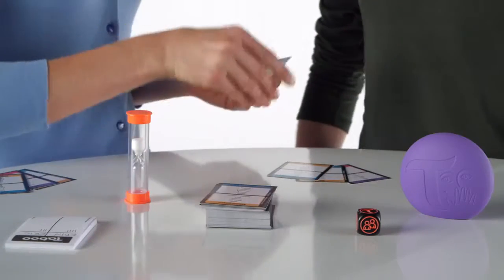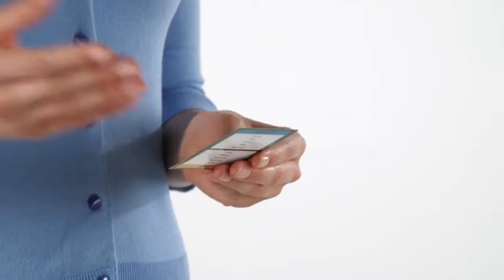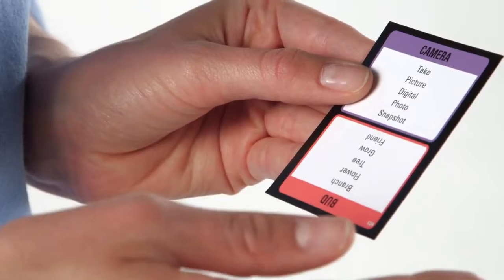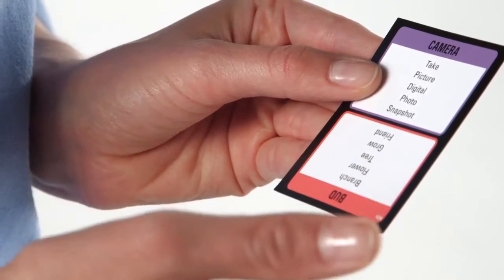One player then begins describing the clue found on the card, trying to get their teammates to guess. That player can say anything except the taboo words listed on the card.